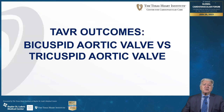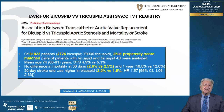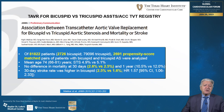Regarding bicuspid versus tricuspid aortic valve and TAVR outcomes, the ACC-TVT registry — one of the largest reported, with over 81,000 patients — used propensity score-matched pairs to show no difference in 30-day mortality between the two groups. However, at 30 days, stroke rate was higher in patients with bicuspid aortic valve in comparison with patients with tri-leaflet valve and aortic stenosis.